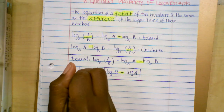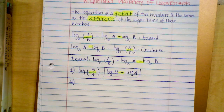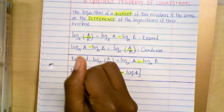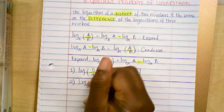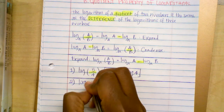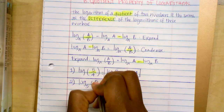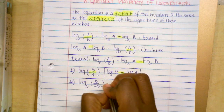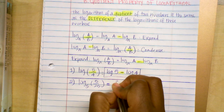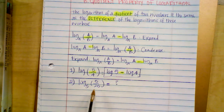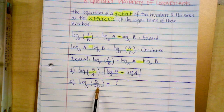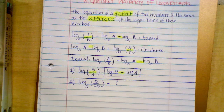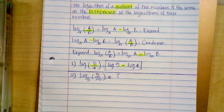Let's do number two. For number two, you have log base five of (five over 25). How would you expand this log? Please pause the video and expand the log.